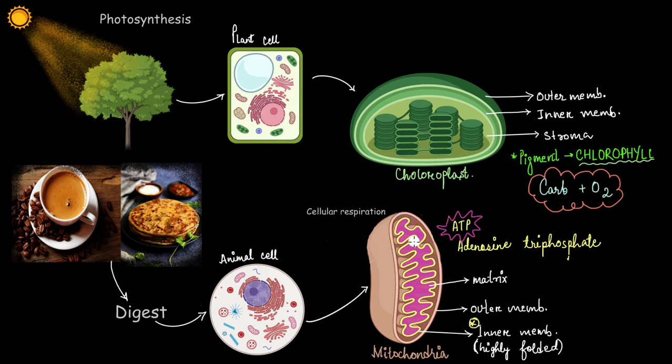And in cellular respiration along with ATP, certain byproducts are also released by the cell. So, the byproducts are carbon dioxide and water. Now, I want you to pause the video and look carefully at the products of photosynthesis and cellular respiration.